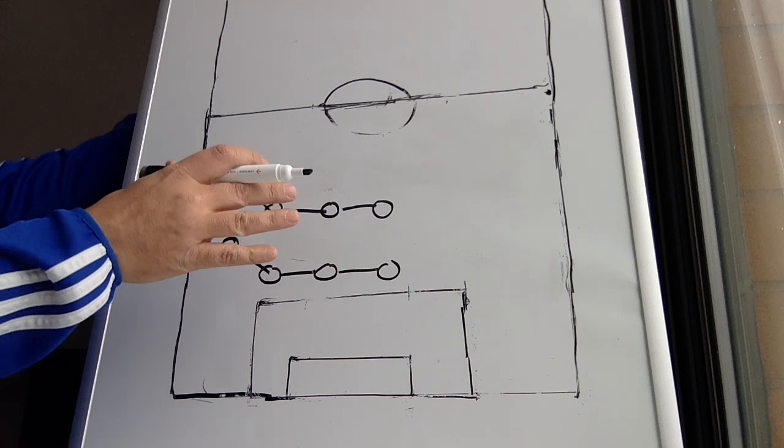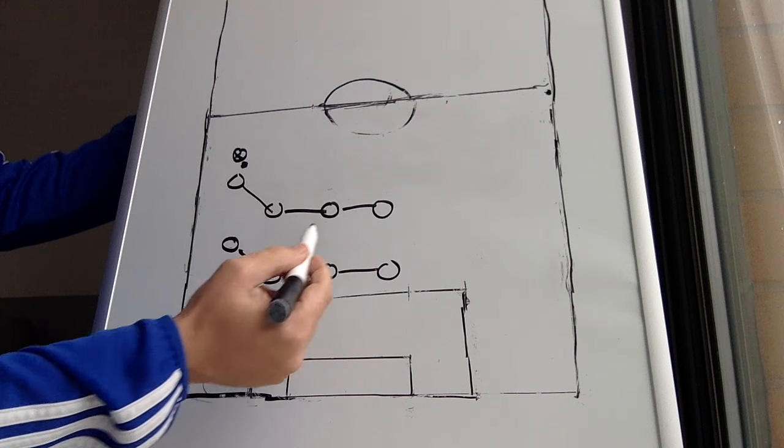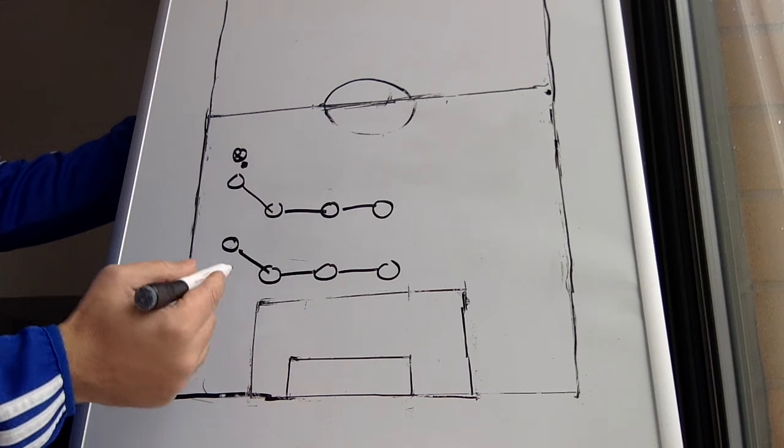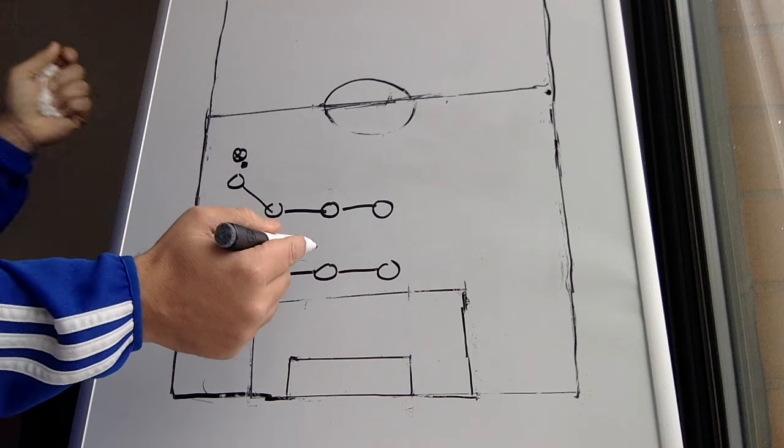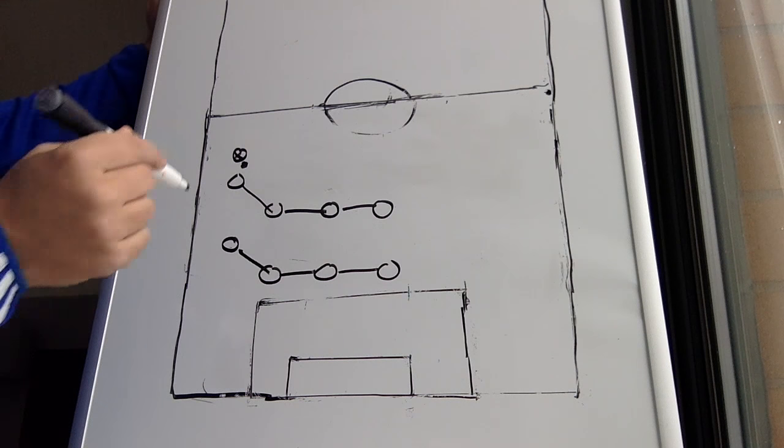Today we're going over defensive organization, obviously in our own defensive part of the field, our defensive third. I'm giving this example here with two lines of four, so this is a 4-4-2 type of example.